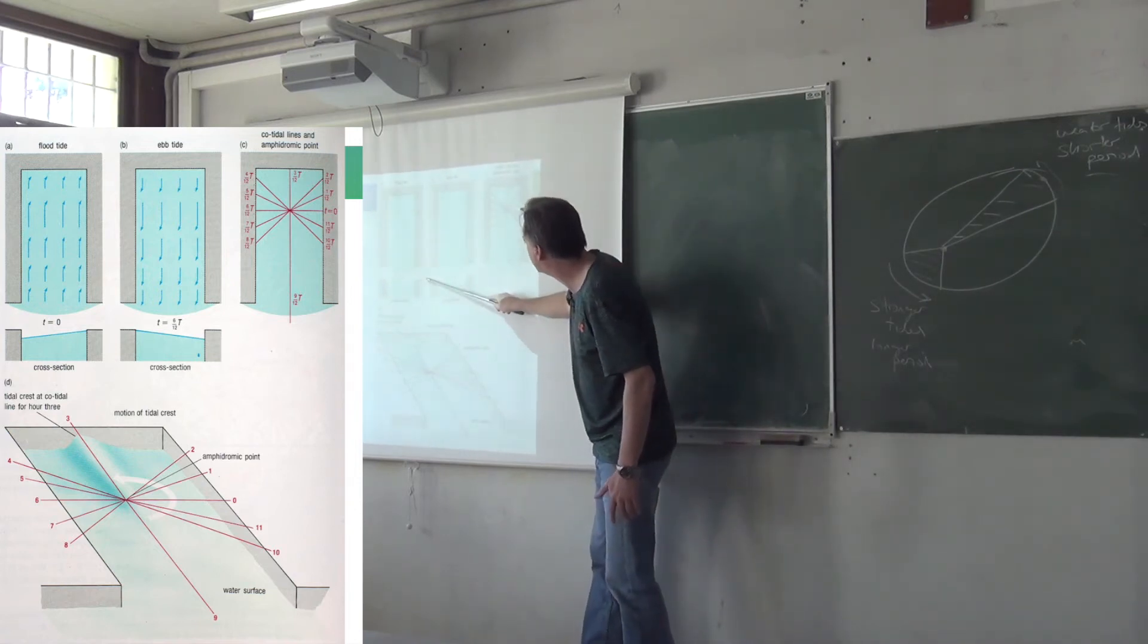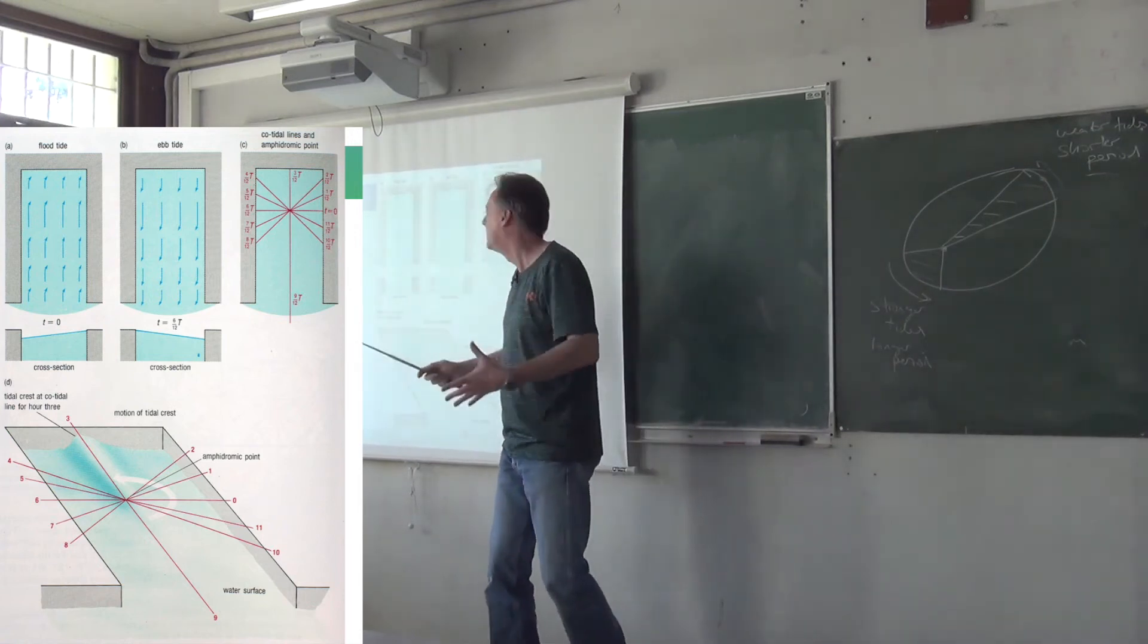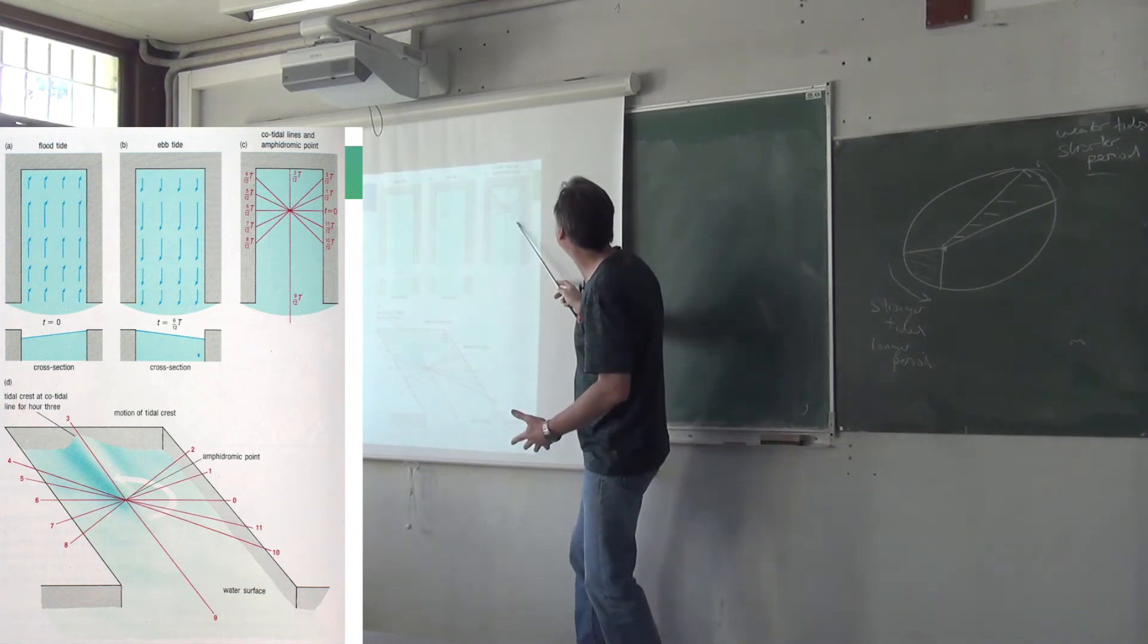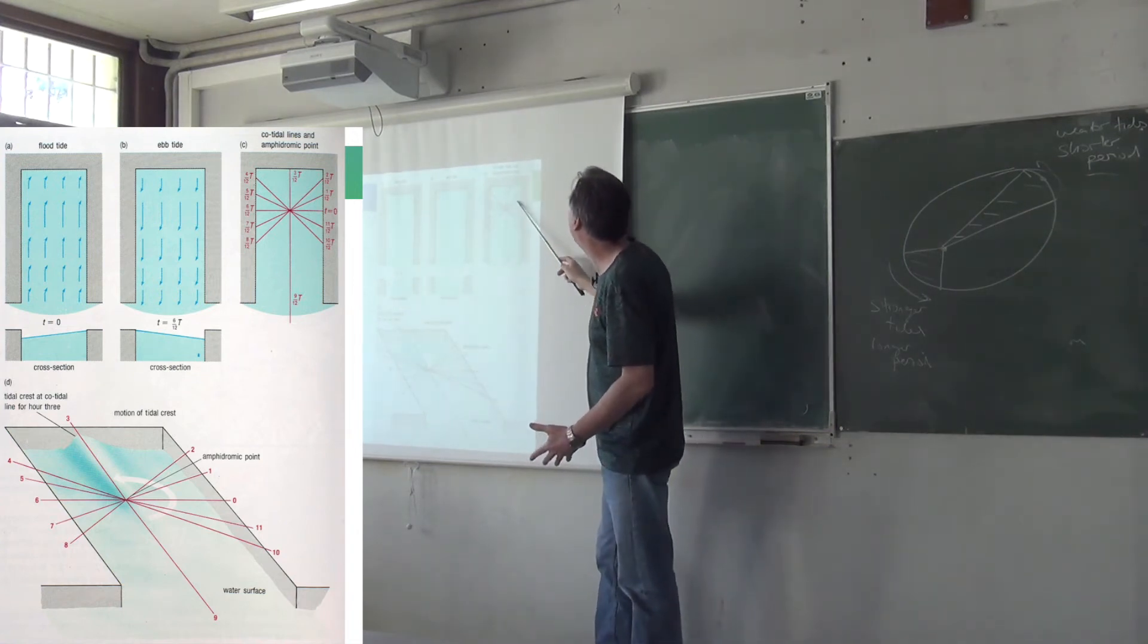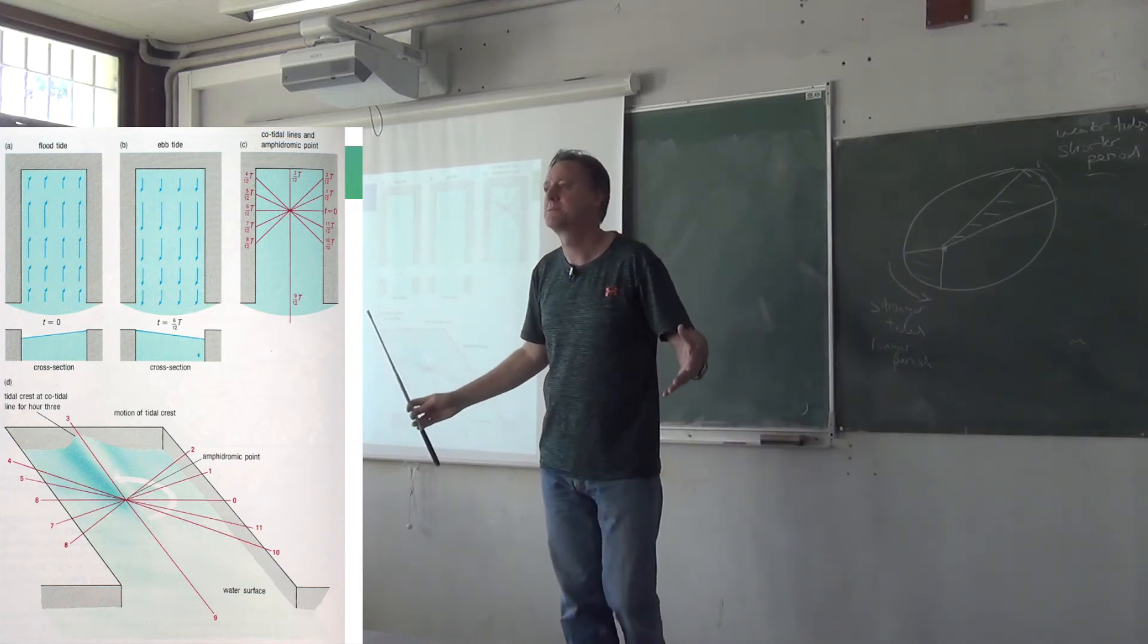So it'll pile up against the opposite wall. So, in the process of a tidal cycle, it has gone around the basin like that. Around these phase lines like that, anticlockwise, just like a Kelvin wave, because that's what it is.